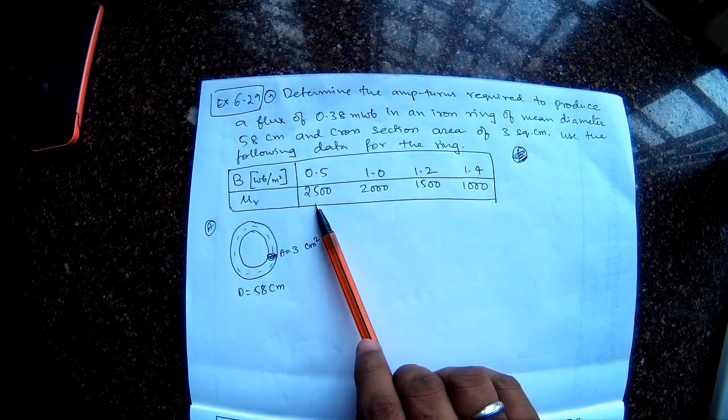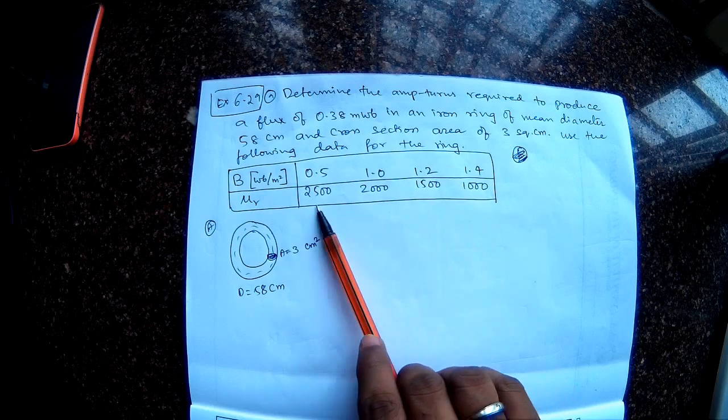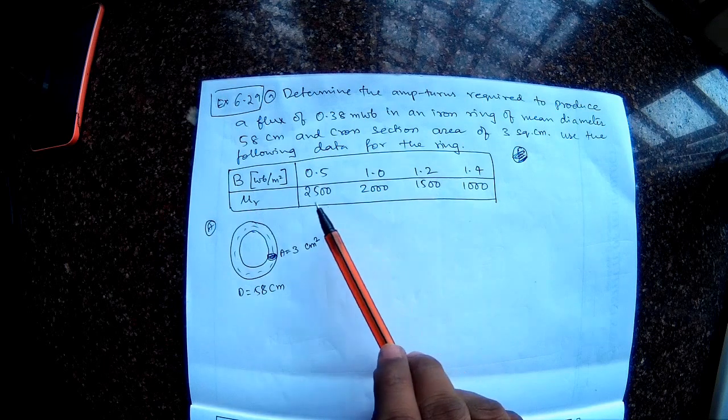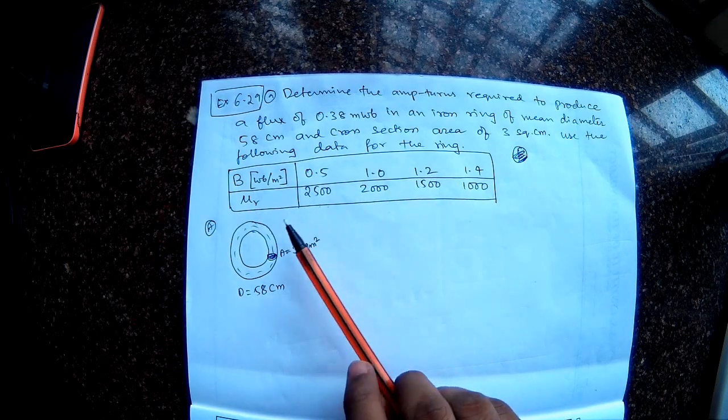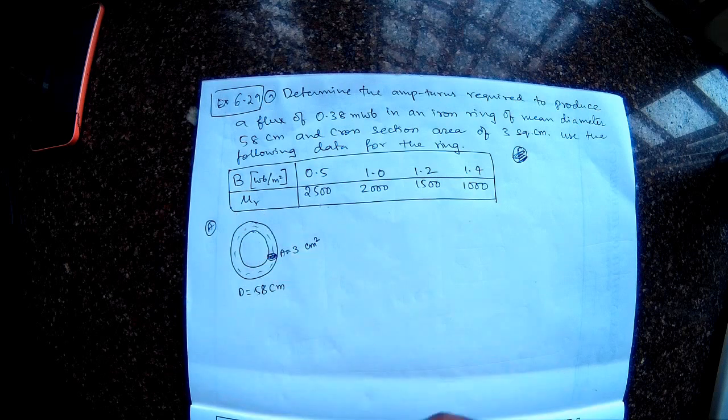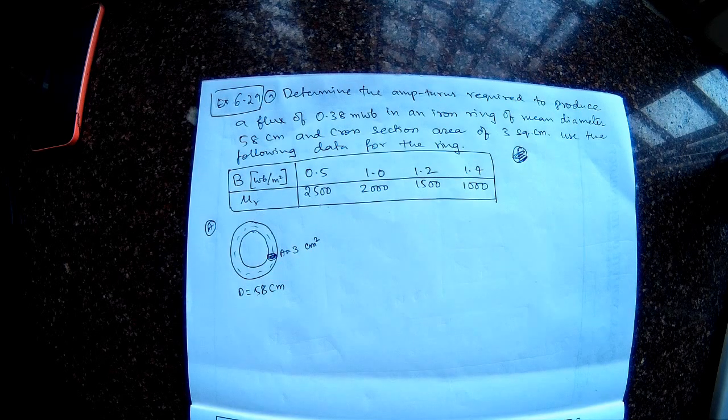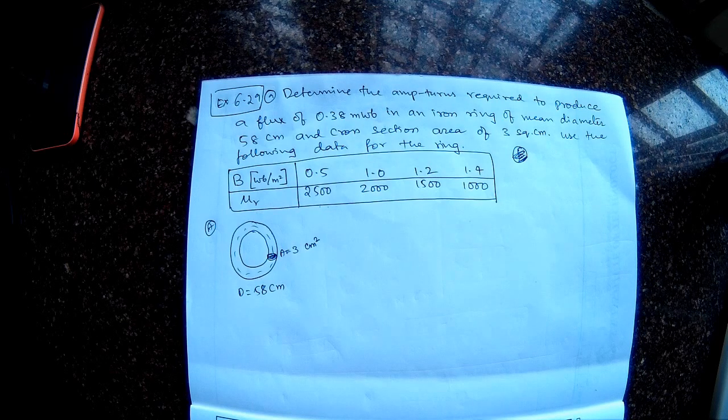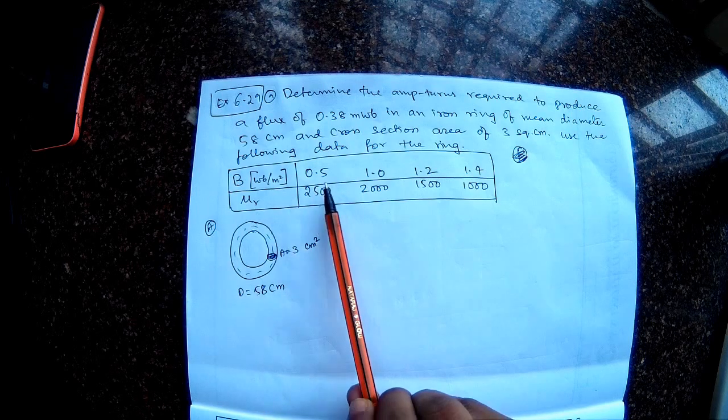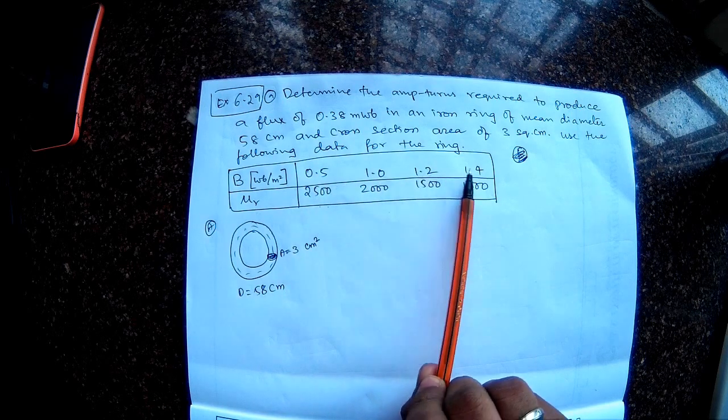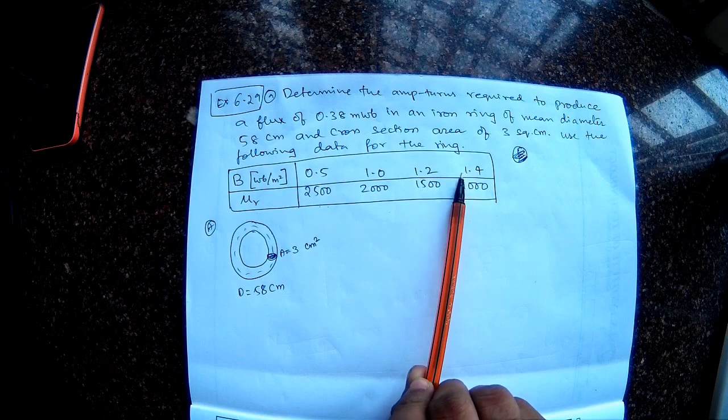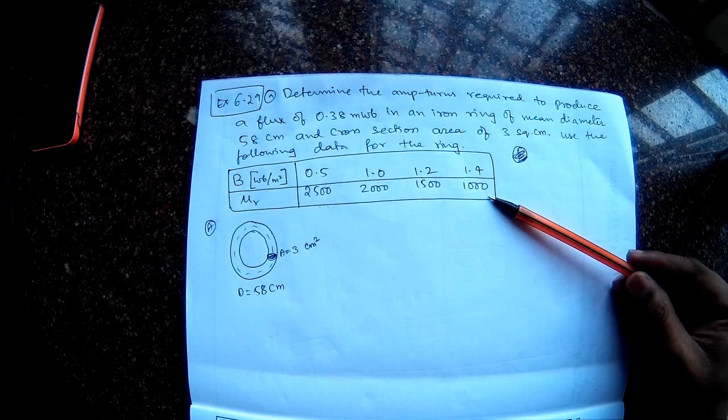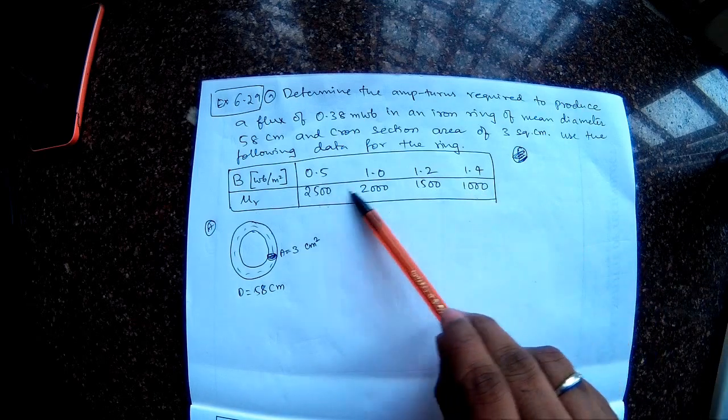And as you notice when the flux density is increasing from 0.5 tesla to 1 tesla to 1.2 tesla to 1.4 tesla, the relative permeability of the magnetic material is decreasing. So this is what is expected. Mu R is not a constant; mu R keeps reducing. That means the mu R value is high, relative permeability is high, that means it offers very low reluctance for the magnetic flux to flow. That is true when the flux density is less.